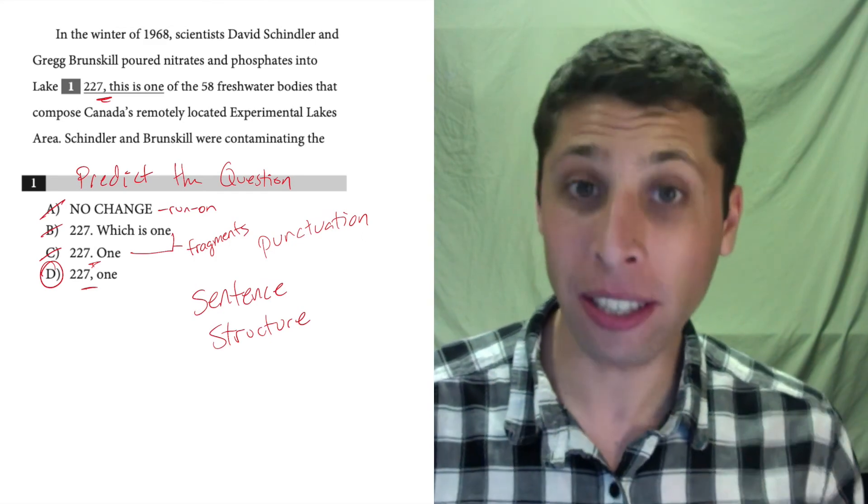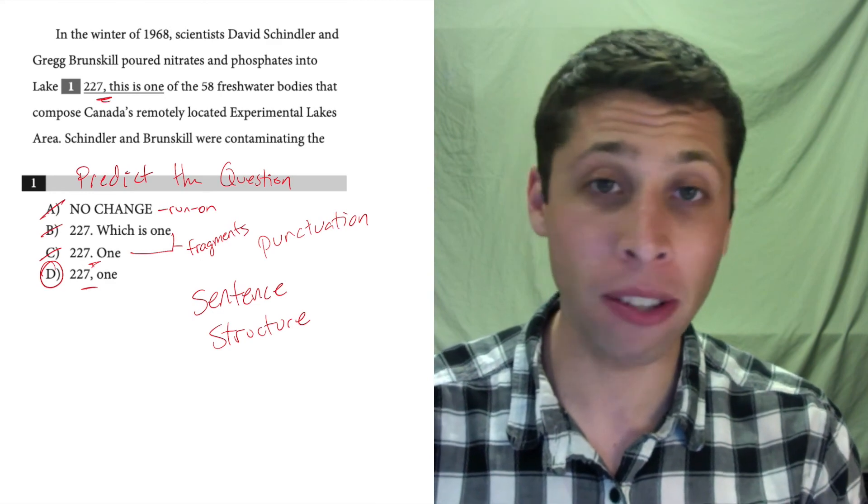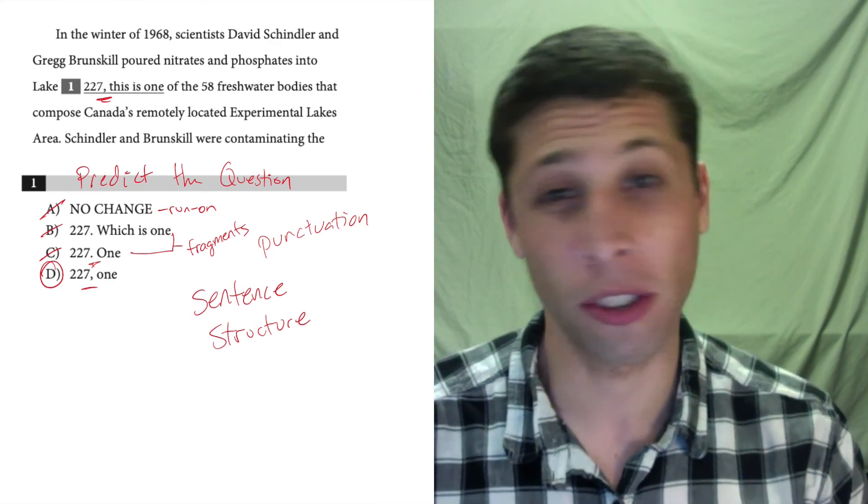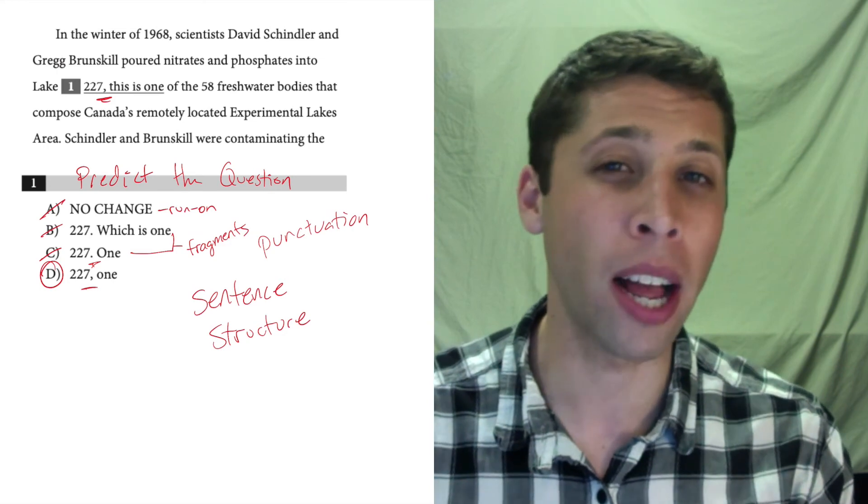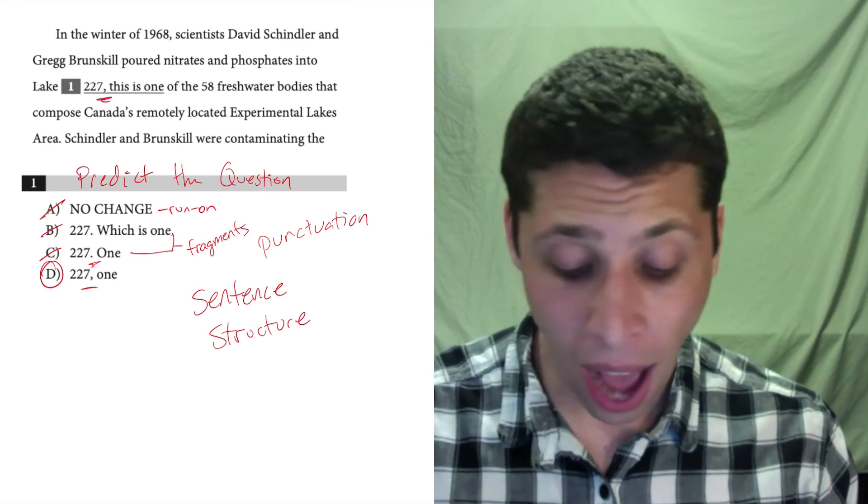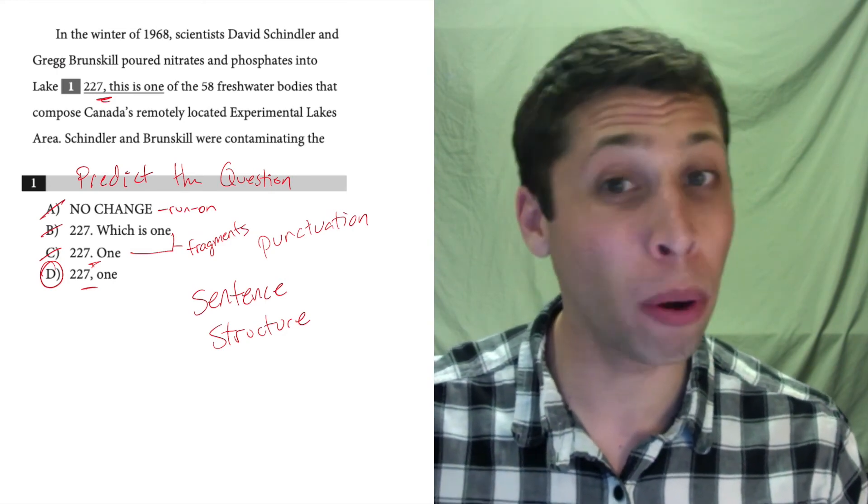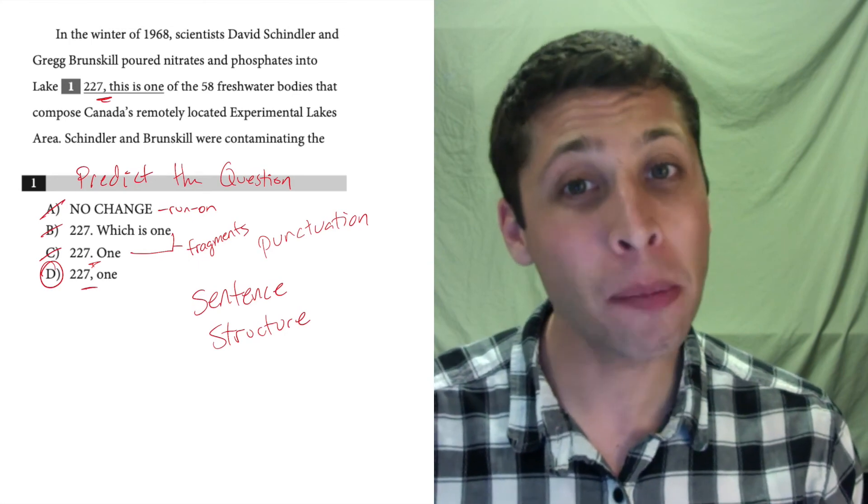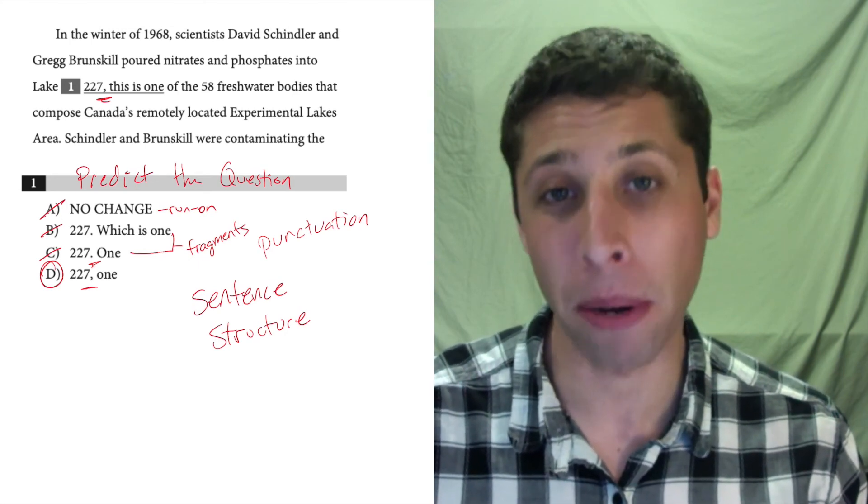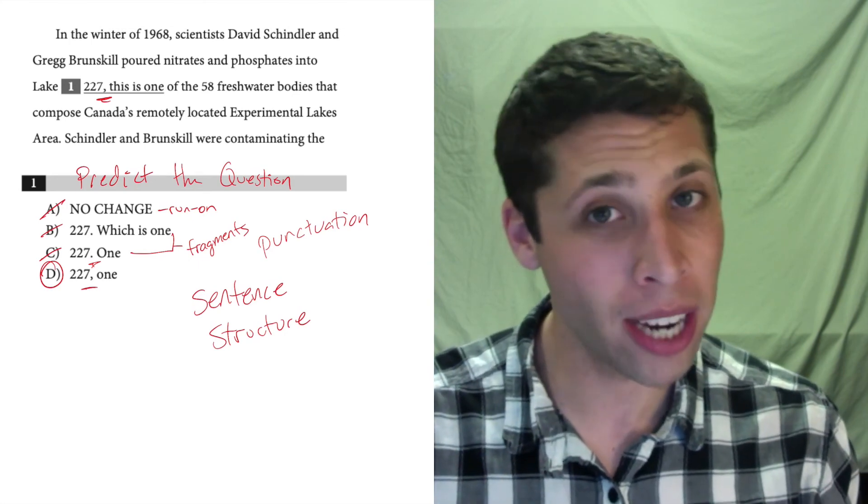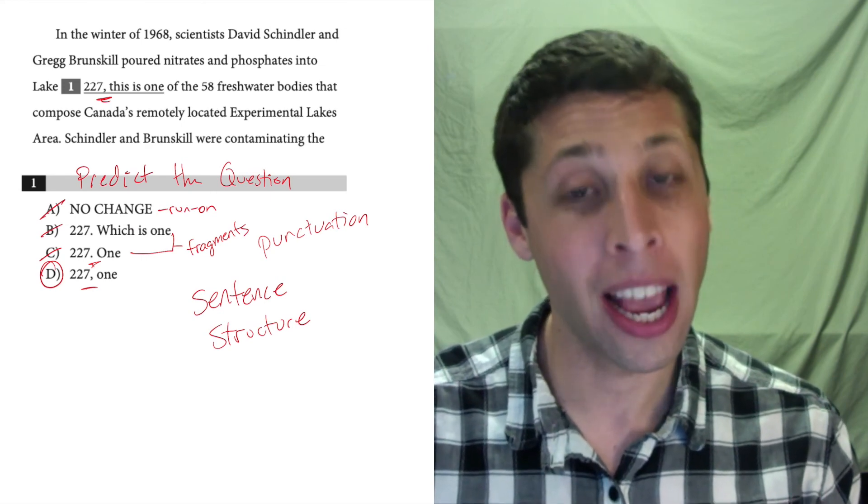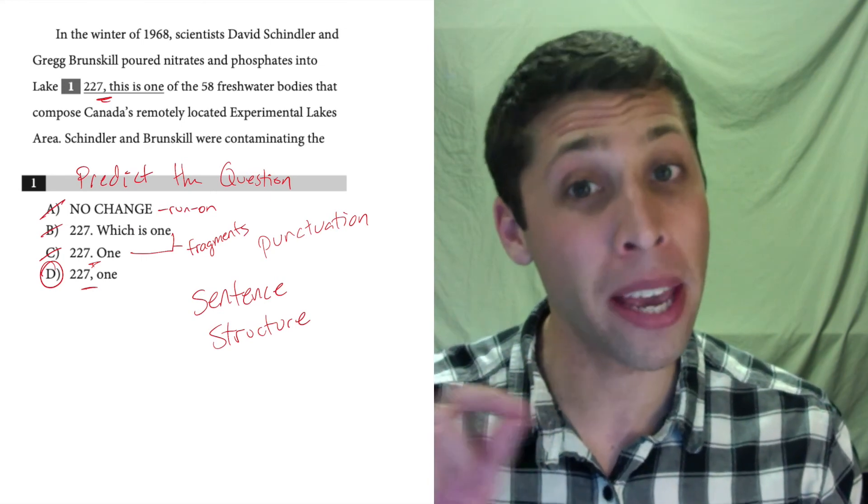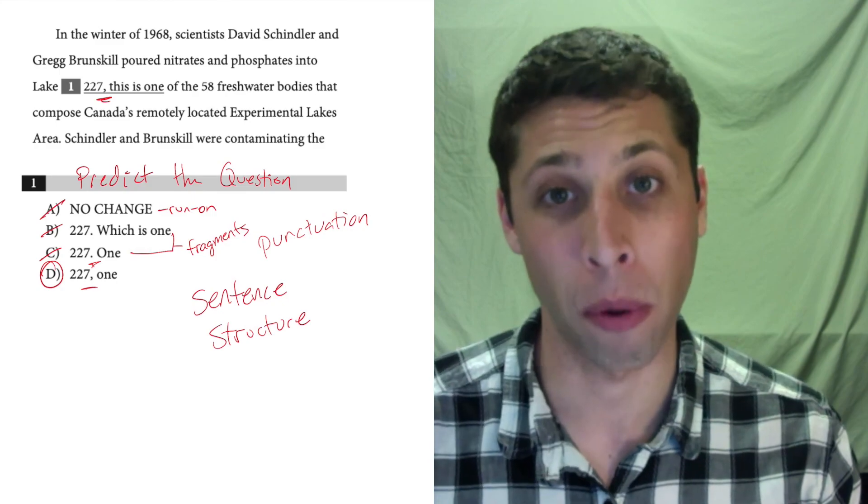This is a really tough question to start things off. Fragments and run-ons tend to be some of the hardest questions on the SAT writing section because you can't really rely on how a sentence sounds. I think that choices A and D both sound pretty good. But that's because when I'm reading, I'm not thinking about the punctuation. But as soon as I'm writing, punctuation matters, and commas versus periods make a big difference on how we interpret what we're reading.